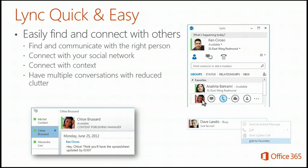This is what the Lync client looks like. If you want to find somebody, you simply type their name here — they'll appear in the contacts below. You can add them as a contact. Double-click on their name, select the IM button to start chatting, or select Call for a PC-to-PC call, assuming both parties have audio capabilities on their devices.